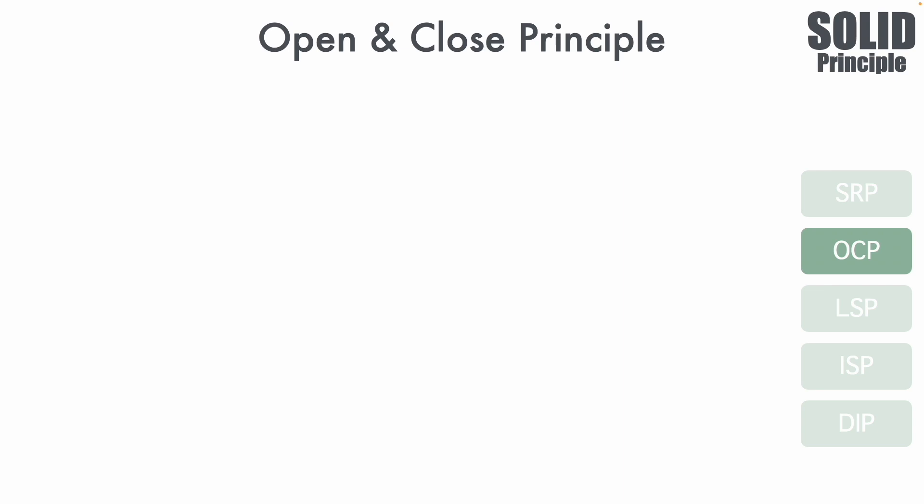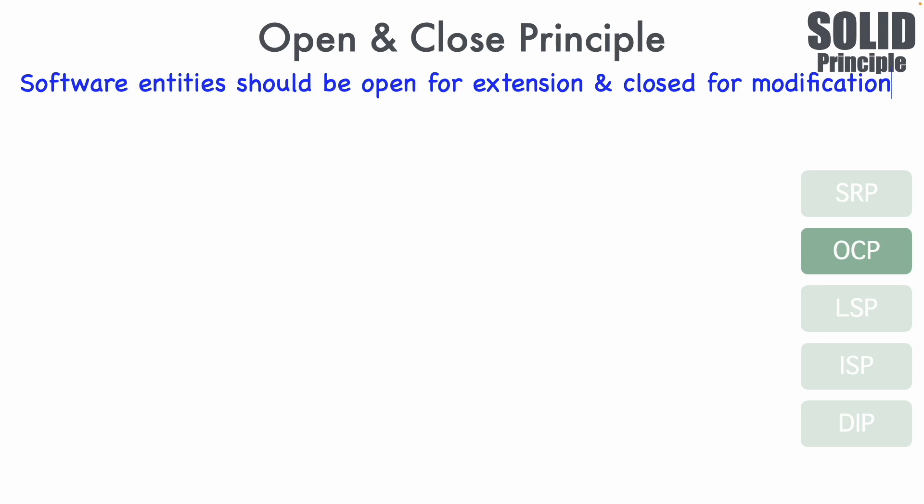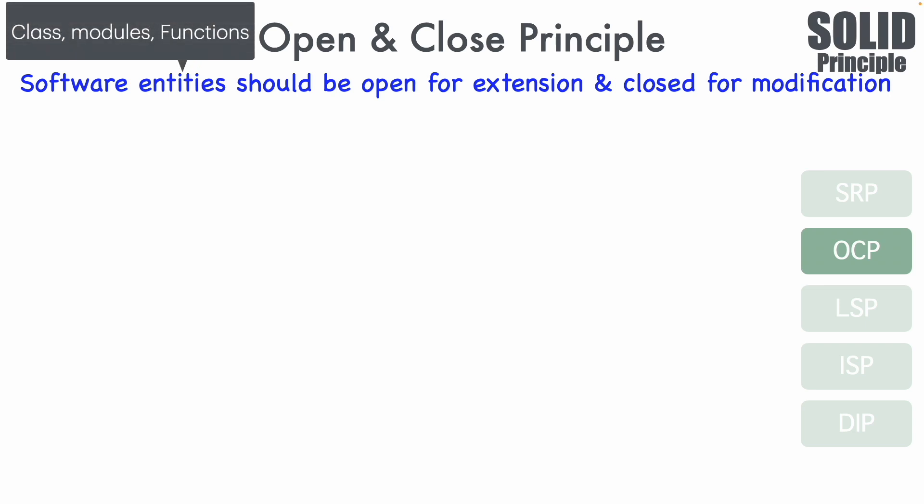What is this principle? The definition says software entities should be open for extension and closed for modification. When I say entities, it basically means classes, modules, and functions. These classes, modules, and functions should be open for extension and closed for modification.